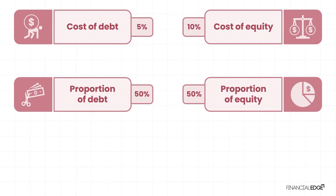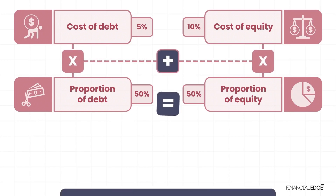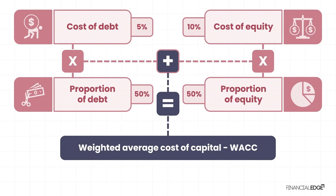Now we have the cost and the relative weighting for both of our sources of financing, we can very easily calculate the weighted average of these to give the WACC, or weighted average cost of capital. Using these simple numbers — a 50/50 split of debt and equity, 5% cost of debt, and 10% cost of equity — the WACC calculated would be 7.5%. If the business generated 7.5% returns on all its investments, it would be able to return 10% to its equity holders and 5% to its debt holders.